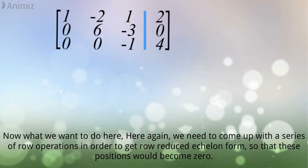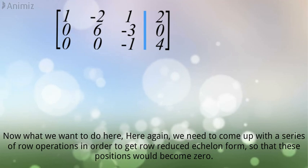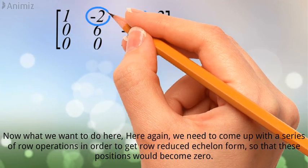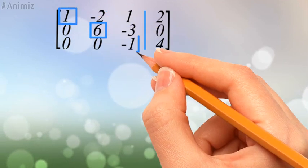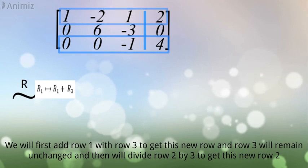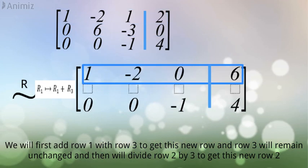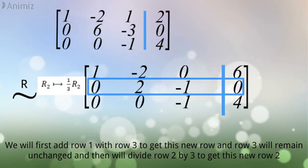Now what we want to do here. Here again, we need to come up with a series of row operations in order to get row reduced echelon form, so that these positions would become 0, and the pivot elements of each row would be 1. We will first add row 1 with row 3 to get this new row, and row 3 will remain unchanged. And then we'll divide row 2 by 3 to get this new row 2.